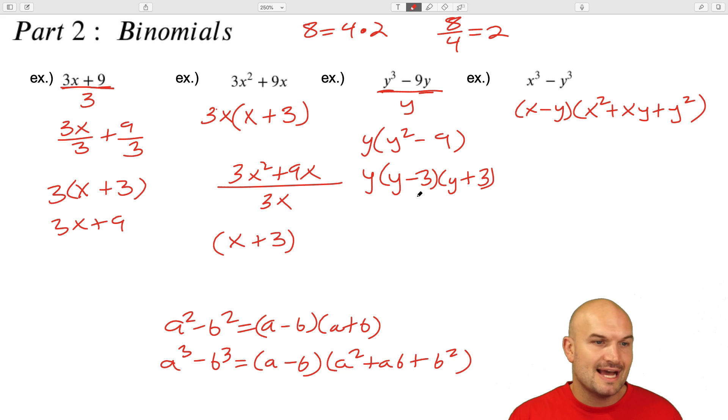So again, looking at factoring binomials, you're trying to factor out the common term or you're dividing out that common term. Just remember when you're dividing, you can rewrite every division problem as a product, and that is the idea of factoring, rewriting your expression as a product. When you have square terms minus square terms, there's nothing you can factor out, there's nothing that they have in common. Look to the difference of two squares as well as the difference of two cubes.